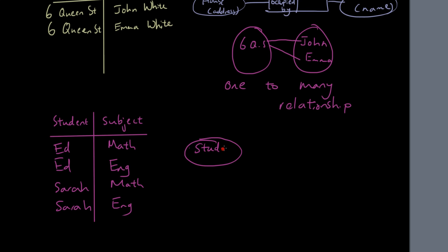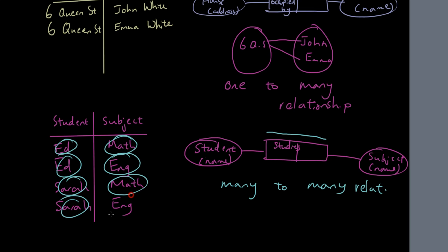And if you draw this out, you've got student name, studies subject name, what you're going to do is you're going to put a horizontal bar over both rows in the relationship, both boxes, you're going to put a horizontal line without a break in the middle, a solid line the whole way through. And this is called a many to many relationship, and the reason for that is because both columns have values repeating. Ed repeats twice, Sarah repeats twice, math repeats twice, English repeats twice as well. But the combination of them does not repeat.